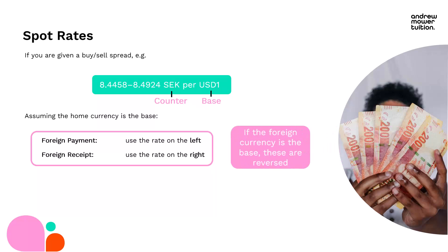Every now and again they'll flip it round. If that is the case you would need to flip those round too - so if you're based in America and they quote it as US dollars per Swedish krona, that seems backwards, and it will flip round. Just adding that caveat, but it's usually going to be: payment on the left, receipt on the right. Ultimately, the bank is always going to win, so whichever rate we choose is going to give us the lowest amount of currency possible.